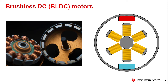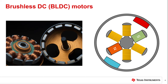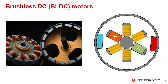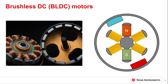The brushless DC motor contains permanent magnets on the rotor and windings on the stator, which is opposite from the construction of the brushed DC motor. For the brushless DC motor, there are no brushes or mechanical commutator — commutation is handled electrically. Typically, brushless DC motors have three phases which create motion when energized in the correct sequence. The animation and image show an outrunner motor with rotor magnets positioned like a shell around the inner stator windings.